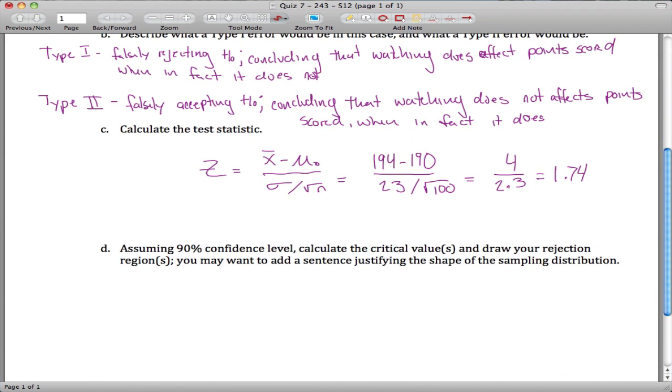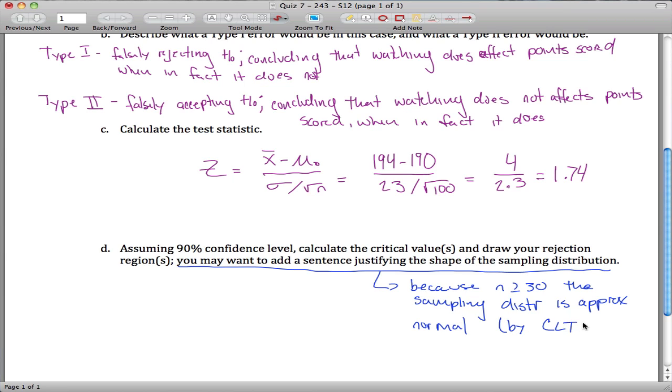So now we have our test statistic. You may want to add a sentence to justify the shape of your sampling distribution because n is greater than or equal to 30. The sampling distribution is approximately normal. This is a little tedious to write all the time. We've seen this a bunch. This is by the central limit theorem.